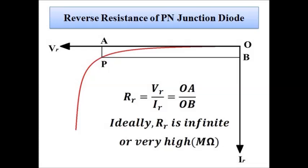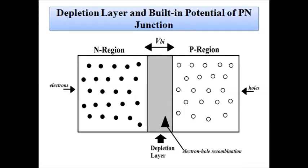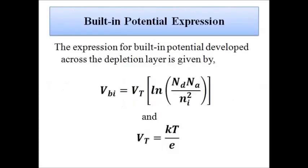So here we have discussed the volt-ampere characteristics of the PN junction diode in forward and reverse biased connections, the concept of depletion layer and built-in potential with its mathematical expression, and the mathematical representation of voltage-current relationships in both bias conditions. I hope you liked this video. Please subscribe to Engineering Tutorial for more videos on electrical, electronics, communication, and instrumentation engineering. Thank you very much.